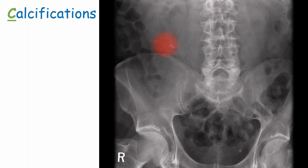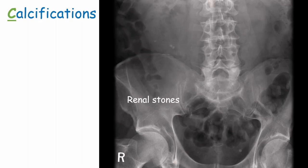Kidney stones can also appear as calcification. They are usually radiopaque as most contain calcium, though those made primarily of uric acid may not be visible. Kidney stones typically get stuck in one of three places: at the start of the ureter, where the ureter passes over the top of the pelvis, or at the end of the ureter - as these are the narrowest points.